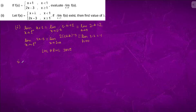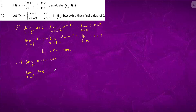Part 2: Limit x tending to 1 minus of x plus lambda equals 1 plus lambda. Limit x tending to 1 plus of 2x minus 3 equals minus 1. If they are equal, then lambda should be equal to minus 2.